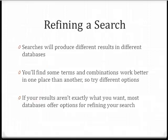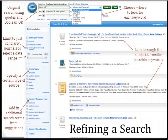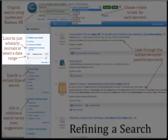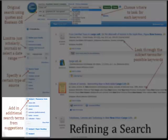Even if you take the time to build an organized, specific search, you will rarely find exactly what you need on the first results page. Database searching is all about trial and error and continually refining your approach, so don't be afraid to keep tweaking your search to see what works best. Most results screens will give you many options for doing it. Try adding, subtracting, or switching out different keywords. You can also limit your results by source or document type, date range, or to those tagged with certain subject terms.